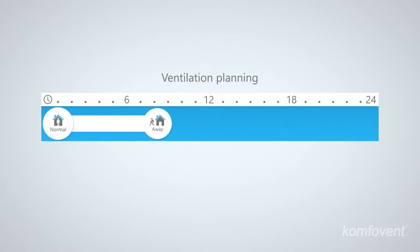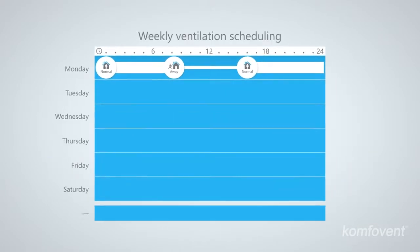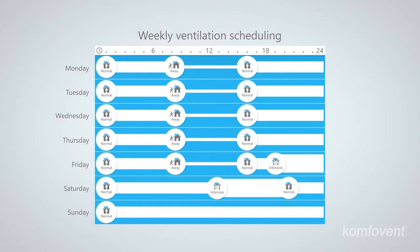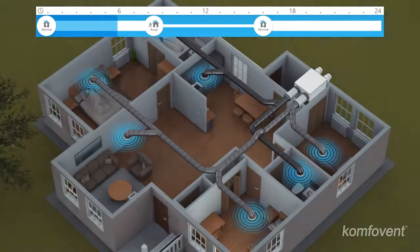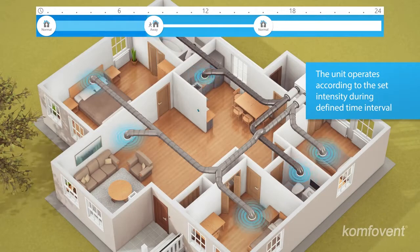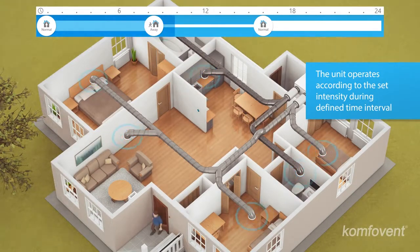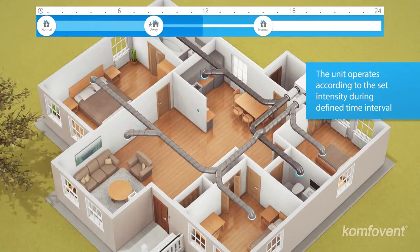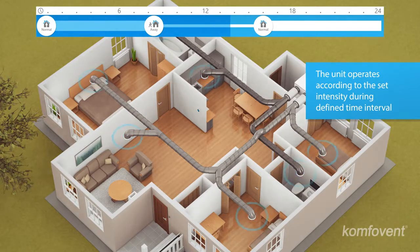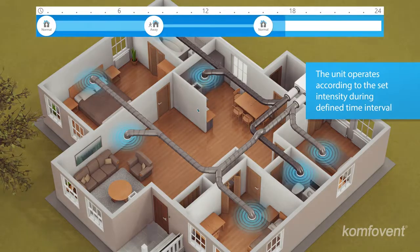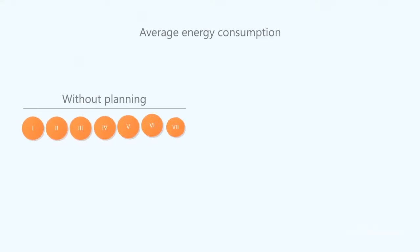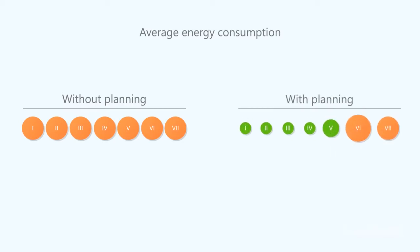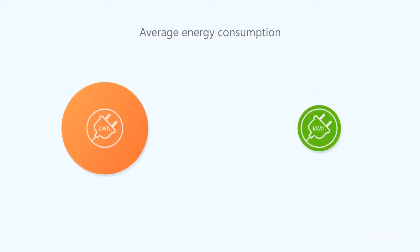Weekly scheduling adjusts the ventilation intensity to your lifestyle. Rooms are ventilated every day of the week for a limited number of hours in accordance with the scheduling program. When nobody is at home, the automation reduces the ventilation intensity, and before you return, the unit starts to operate in normal mode. The scheduling programs can reduce your energy costs for ventilation by half.